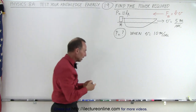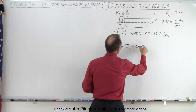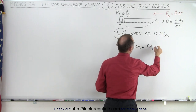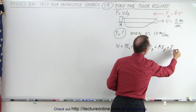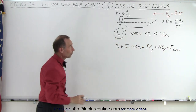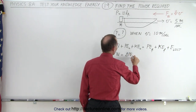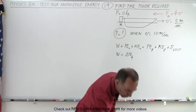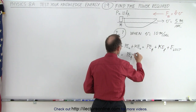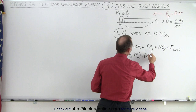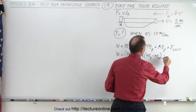We start with our original energy equation: force input plus original potential energy plus original kinetic energy equals final potential energy plus final kinetic energy plus any energy lost due to overcoming friction — in this case, energy lost by moving through the water. We can rewrite this so that work put into the system equals the change in potential energy plus the change in kinetic energy plus the energy lost to overcome friction.